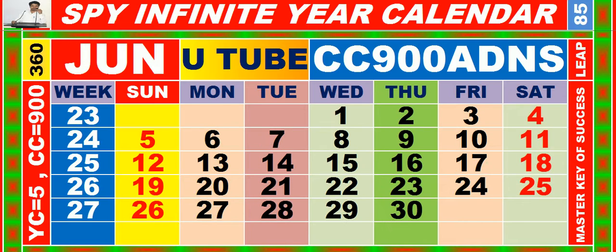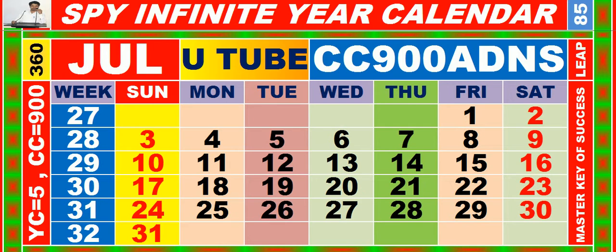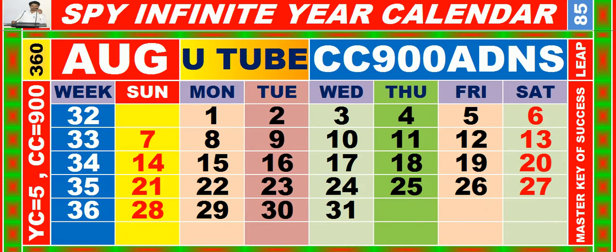Calendar for the month of June having calendar code equal to 9-0-0. Calendar for the month of July having calendar code equal to 9-0-0. Calendar for the month of August having calendar code equal to 9-0-0.